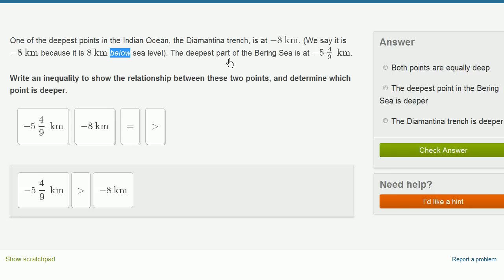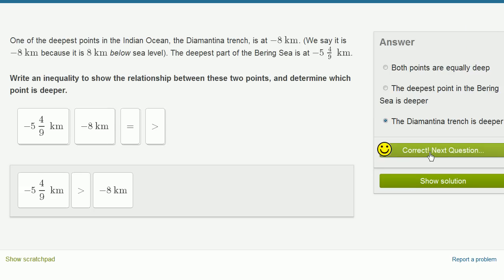And that is, so let's see, negative 8 kilometers, the Diamantina Trench at negative 8 kilometers is the deeper point. And this is fun because in some of these questions, you actually learn things. I always thought that the deepest part of the Bering Sea... well anyway, we can talk about that another time. So negative 8 kilometers. So the Diamantina Trench is deeper. Let's do one more.